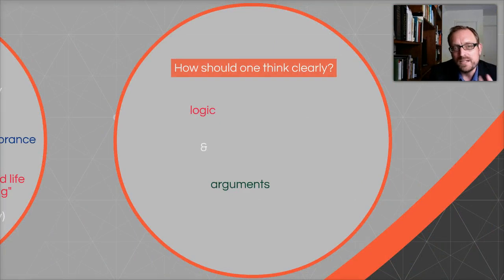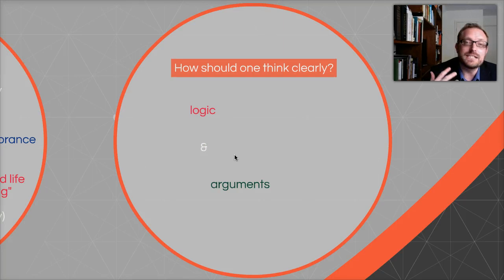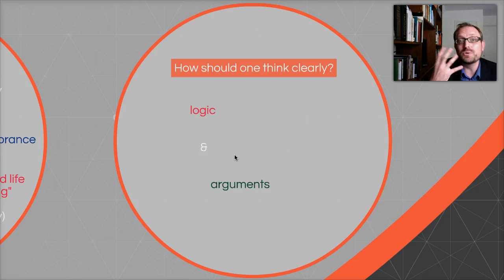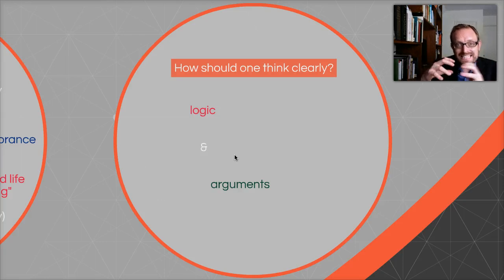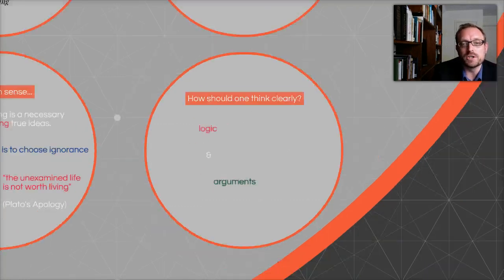How should one think clearly? That's what a lot of this course is about. On the one hand, thinking clearly means engaging in logic. What is logic? Logic is the science of arguments. What is an argument? It's not people arguing with each other — an argument is when you provide reasons for holding a specific idea, provide evidence for a specific claim. Logic is about connecting ideas in order to hold or accept other ideas, linking ideas together to prove that certain claims are justified or unjustified, worth holding or not worth holding.